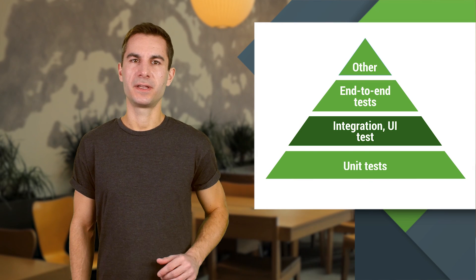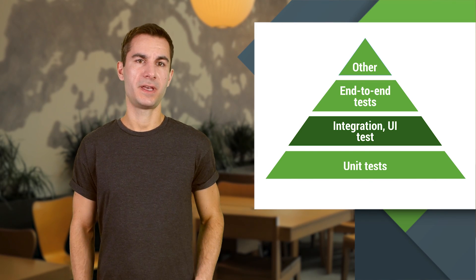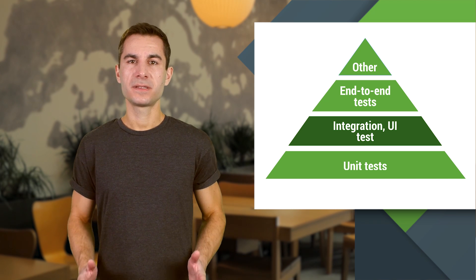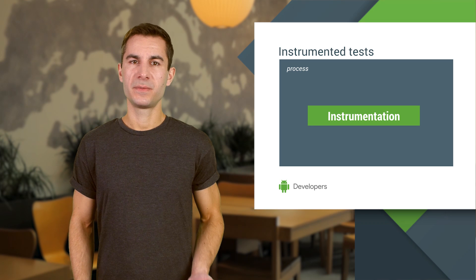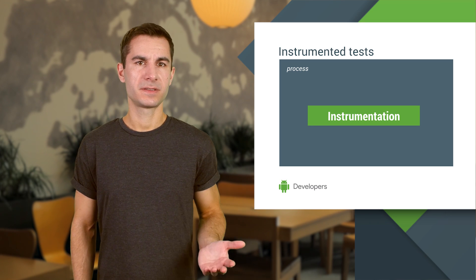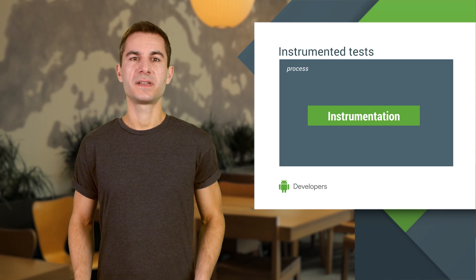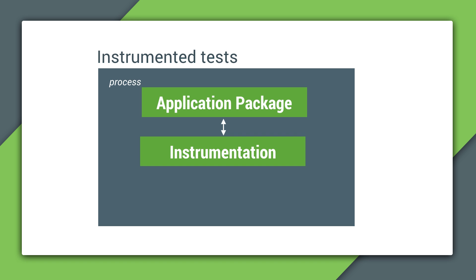But you are writing an Android app after all, so you need to be able to test how your code behaves on a real device or emulator. And that's when you'd want to use instrumentation tests. Instrumentation is an Android framework component that provides additional monitoring and control over the application under test. Through the use of instrumentation, we can run tests on a real device or emulator alongside your app's code.